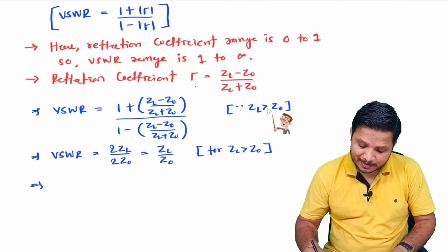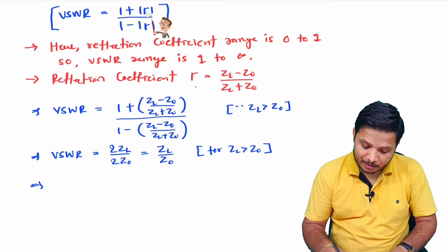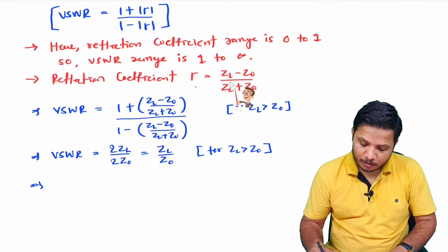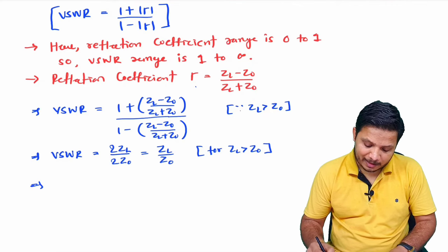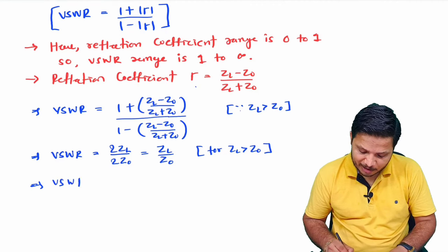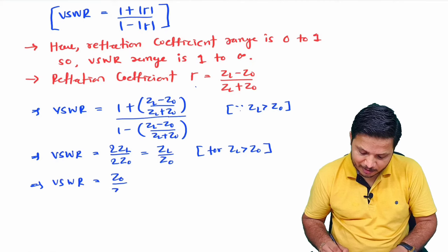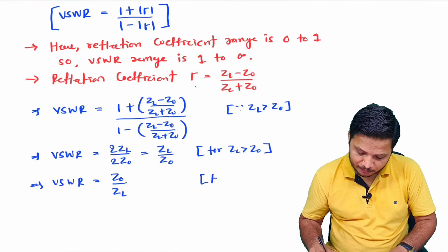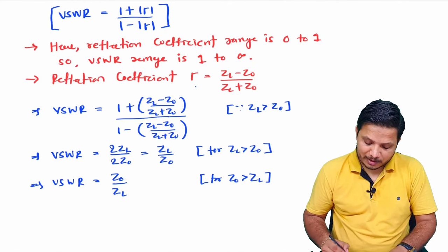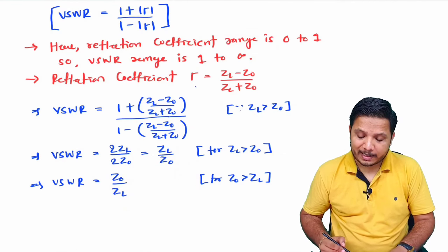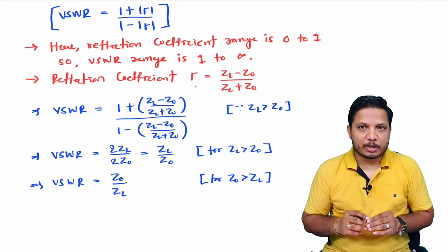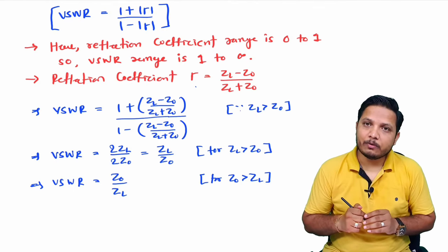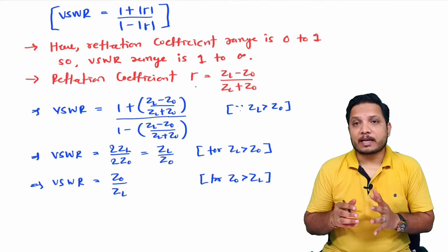For the case Z_L less than Z_0, the modulus of ρ becomes (Z_0 minus Z_L) divided by (Z_0 plus Z_L), and applying the same simplification gives VSWR equals Z_0 divided by Z_L. So based on Z_L and Z_0, we can identify VSWR, and one should know the range of VSWR.